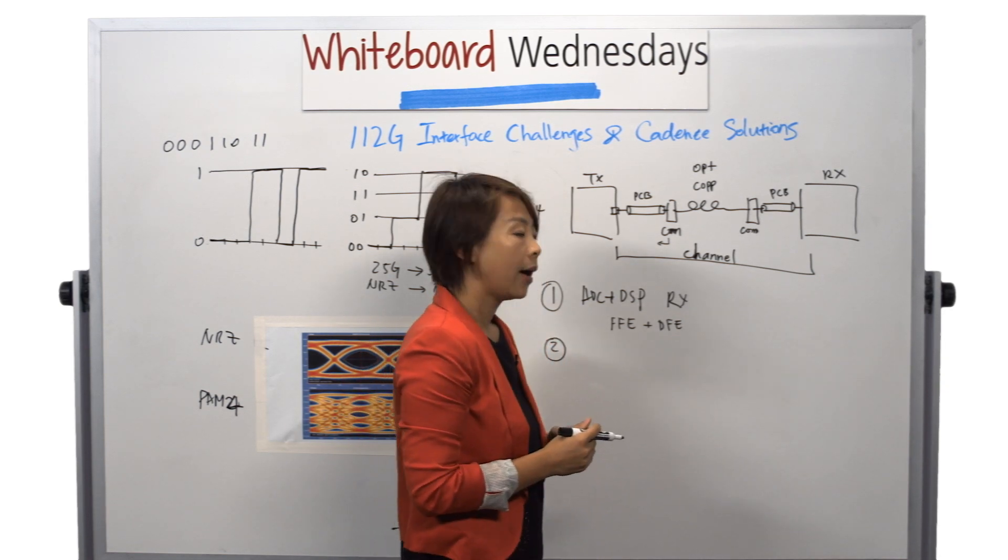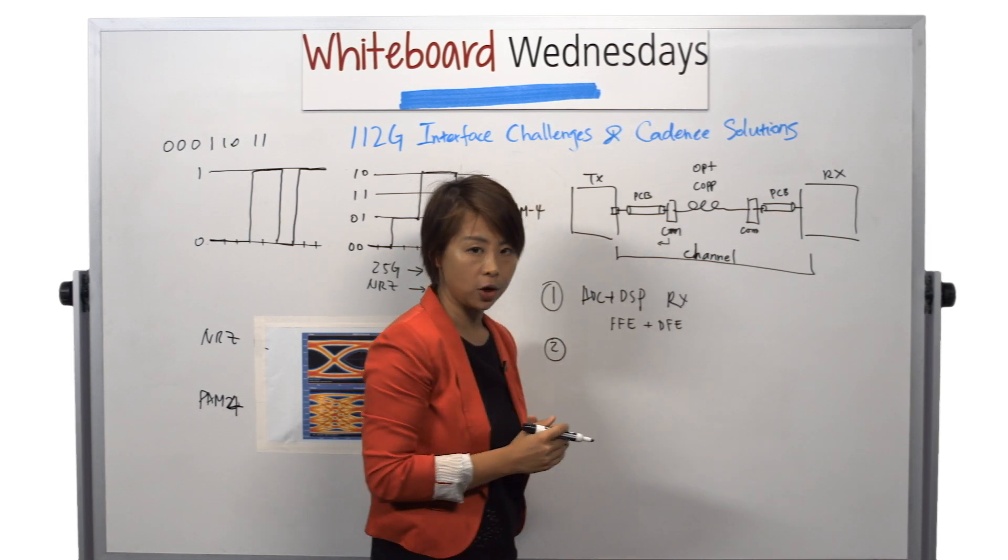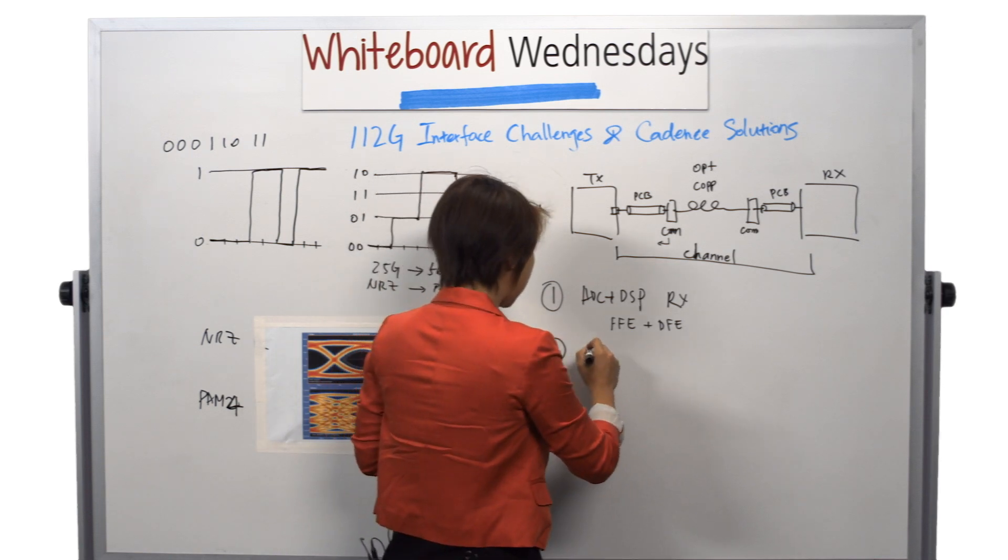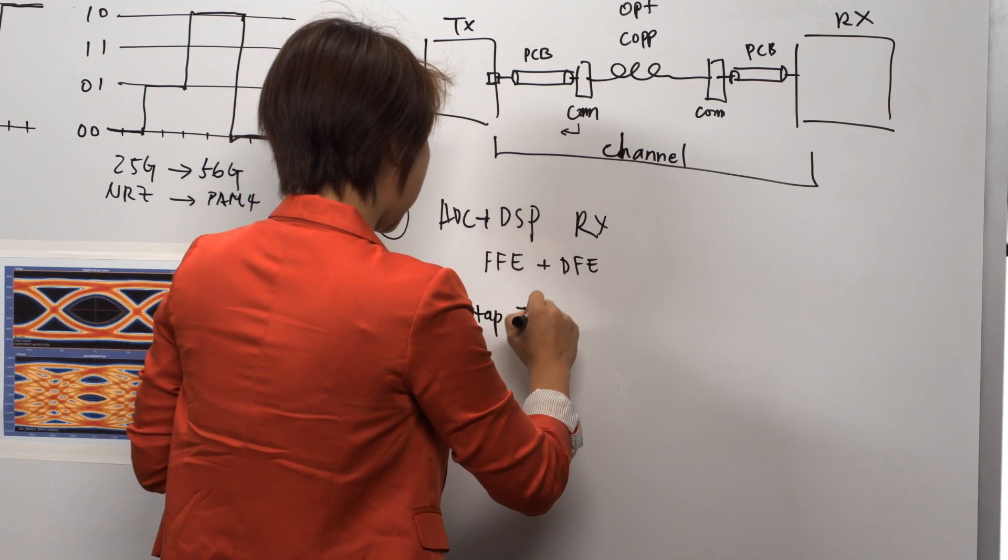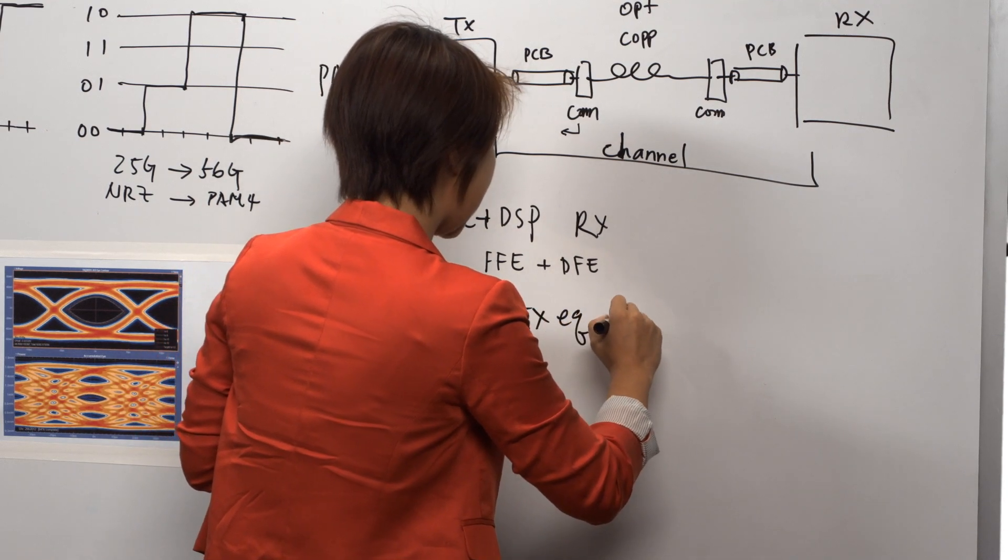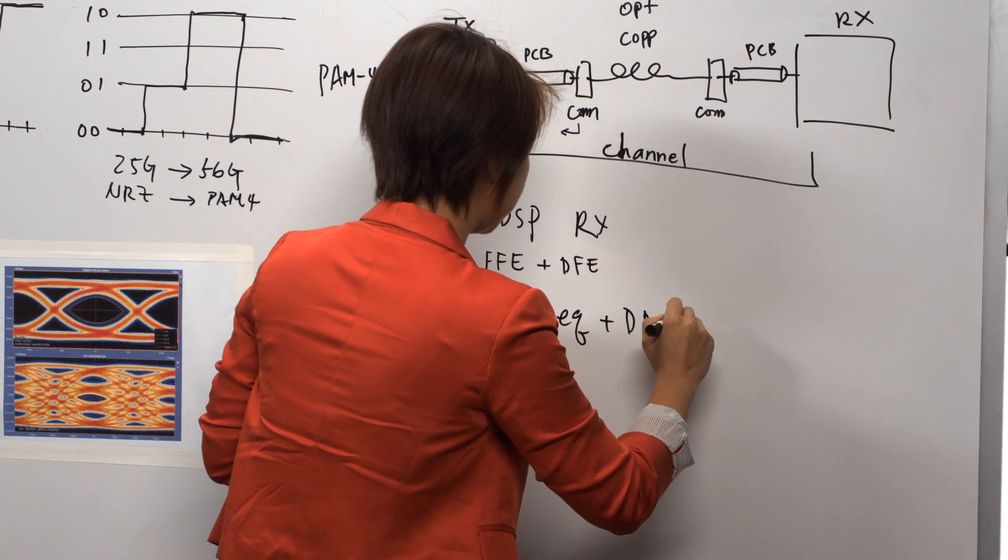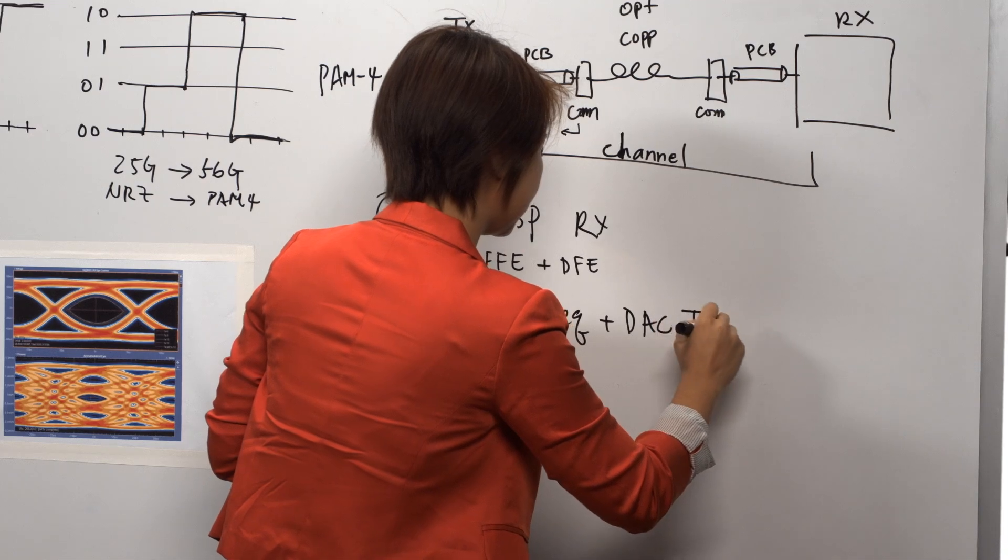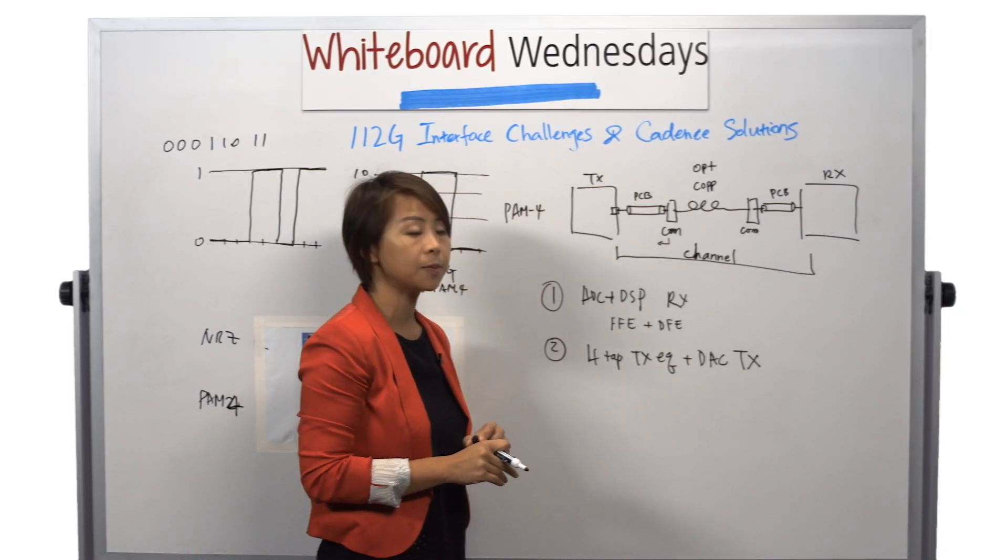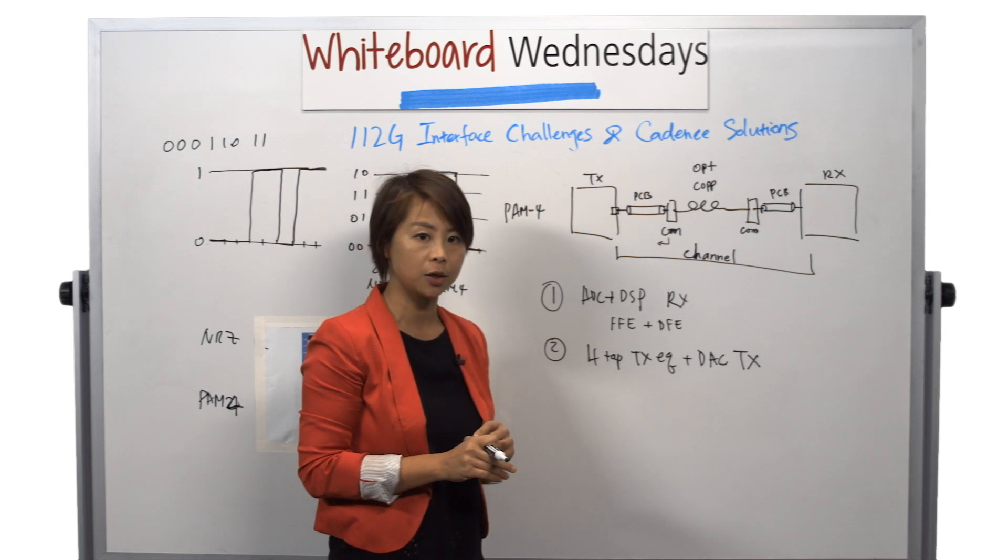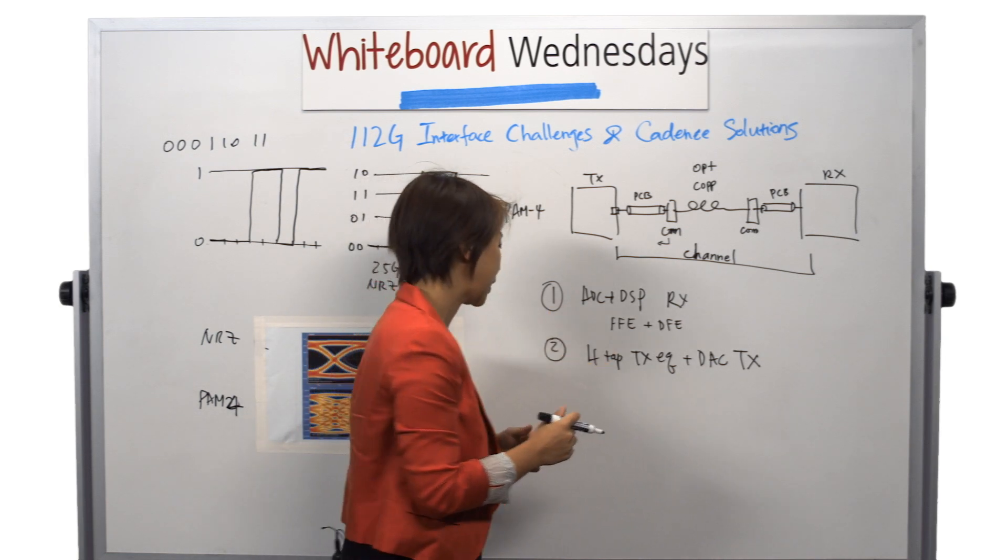Number two is that for the transmitter, we have four types of pre-emphasis, and a DAC-based transmitter. This allows us to provide the ultimate flexibility for the transmitter to help the receiver receive the data correctly.